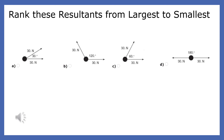Let's rank the resultants that will be produced by these forces from largest to smallest. The closer an angle is to zero degrees, the larger the resultant. The closer an angle is to 180 degrees, the smaller the resultant.